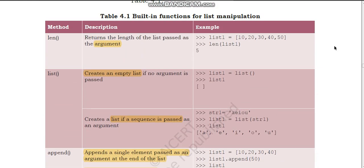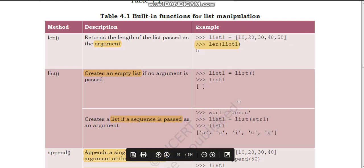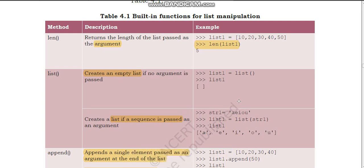In today's video you have learned the append, extend, length, and list methods. Write these down in your copies along with the description and, most importantly, the examples — because without the examples the methods won't be clear. Write the method name, a one-line description, and the example in table format to clearly understand the syntax and output. In the next video we will continue with other list functions.